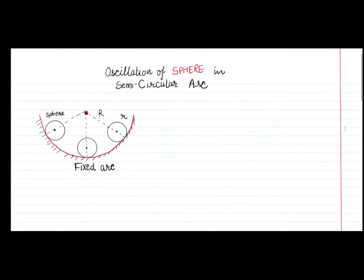Hello everyone, welcome to this session. In this class we are going to attempt a very specific and beautiful problem of vibration wherein a sphere is oscillating within a semi-circular arc. Instead of a sphere we can also consider a cylinder. We will derive the mathematical model of this system and write the equation of motion. This problem looks very complicated at first but it is actually very simple.